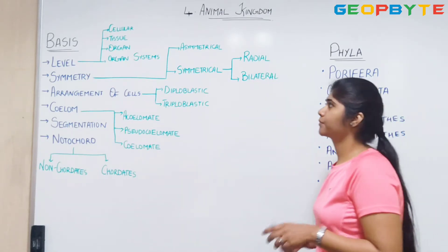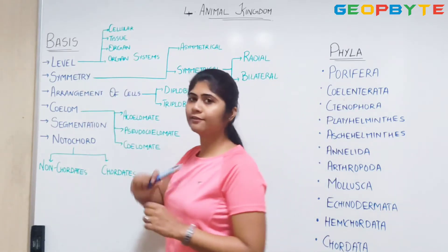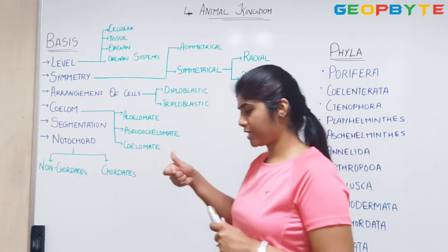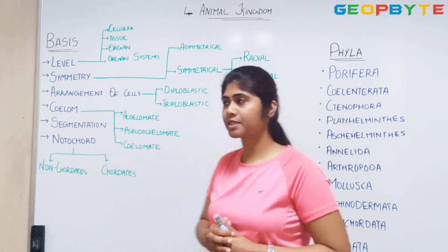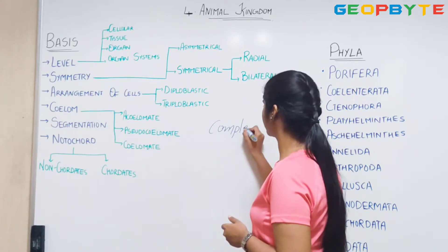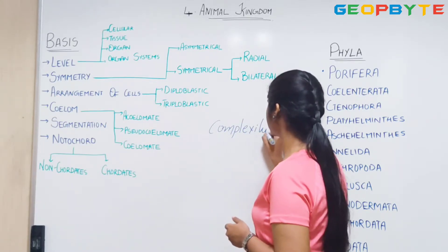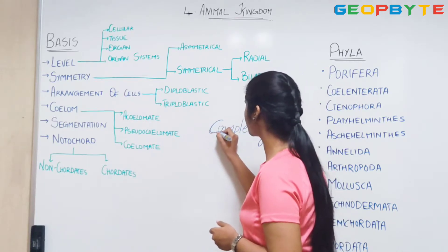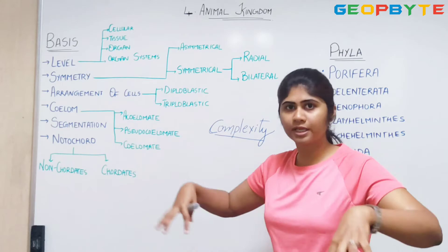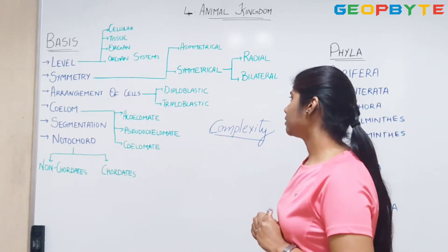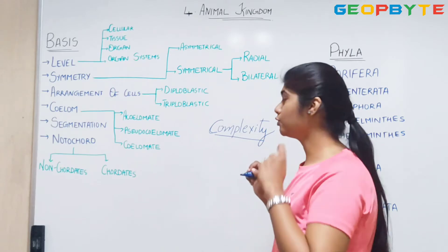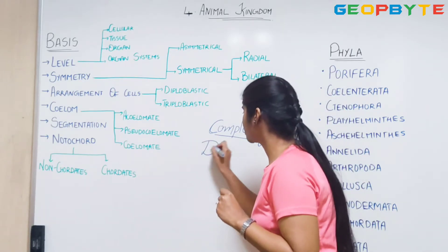The first one is level of organization. When I say level of organization, what do I mean? It deals with something called complexity — how complex is this organism organized into? And one more thing we can talk about in case of level of organization is the division of labor.